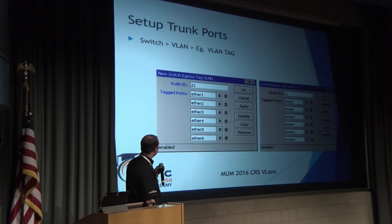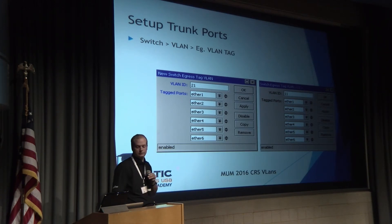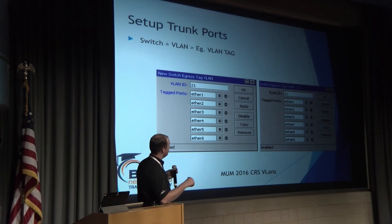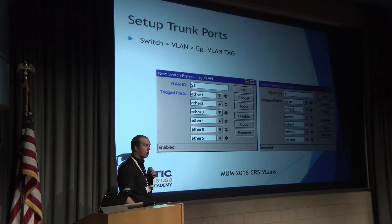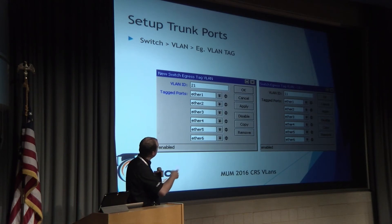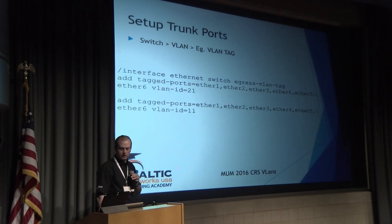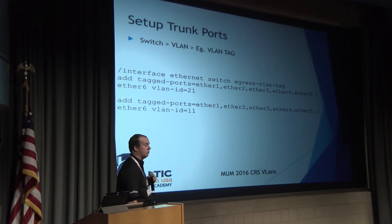To get trunk ports working, go into Switch VLAN and look at the Egress VLAN Tag setting. This tells the switch on which ports to tag traffic for that VLAN going out. For example, referencing the VLAN 400 packet capture shown earlier, you would see tags of 21 and 11 coming out for packets destined for those specific VLAN networks. Here's the command line equivalent as well — this is actually how I prefer to set these up.